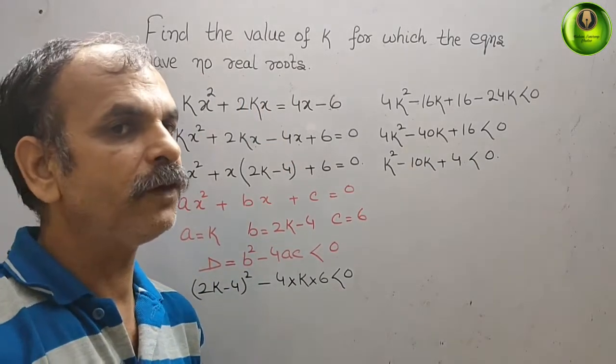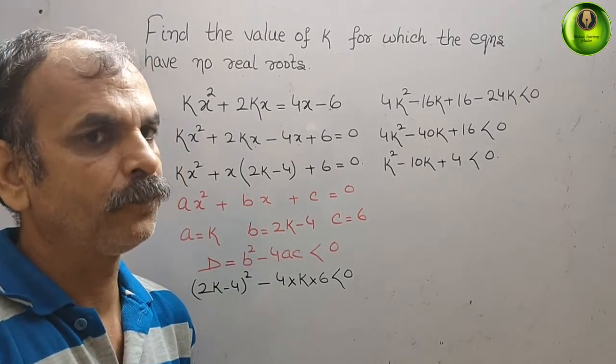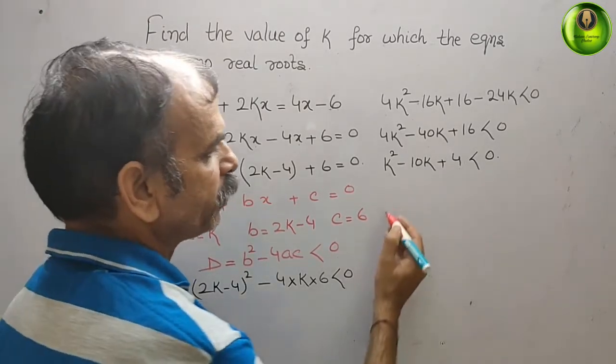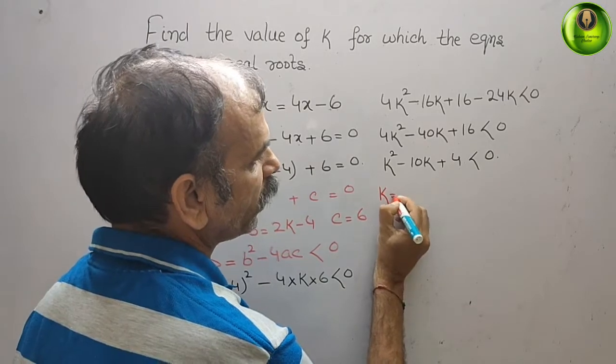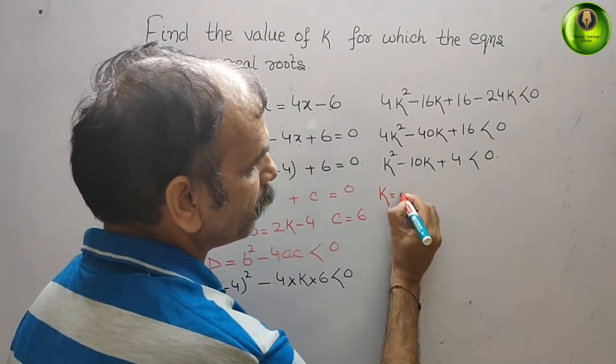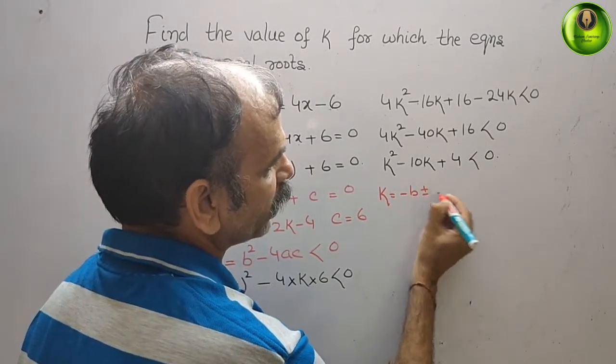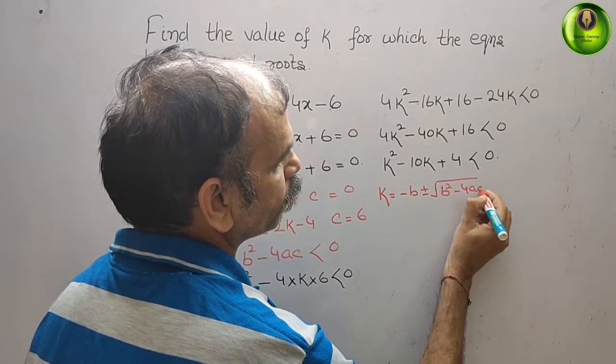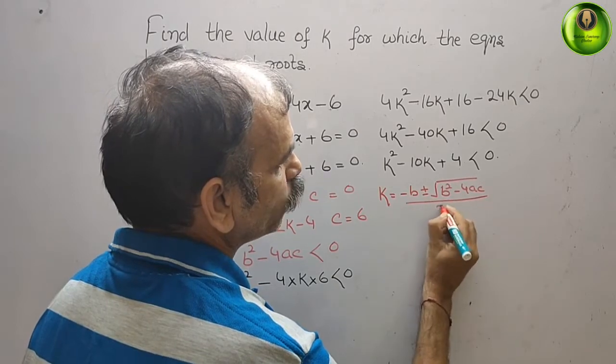So first we will find out the value of k. You can see that k is nothing but the quadratic formula: -b ± √(b² - 4ac) / 2a.